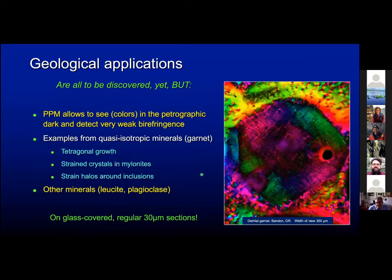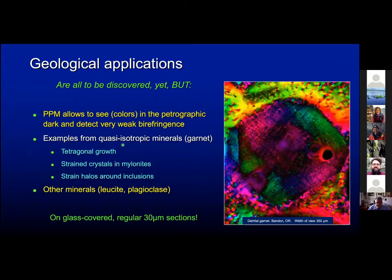Does this have any importance for geologists? I think the answer is yes, because PPM allows us to see colors in the petrographic dark and is able to detect very weak birefringences, like in this small garnet. I will give you some examples from the mineral I've been studying recently for its quasi-isotropic behavior — tetragonal garnets, strain in garnets from mylonites, strain halos around inclusions, and some other minerals. Importantly, the images I'm going to show come from glass-covered regular 30-micron sections, not from thick sections.